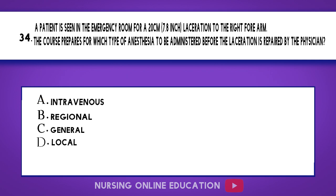Question 34. A patient is seen in the emergency room for a 20 cm (7.8 inch) laceration to the right forearm. The nurse prepares for which type of anesthesia to be administered before the laceration is repaired by the physician? A. Intravenous. B. Regional. C. General. D. Local. The answer is option B: Regional.